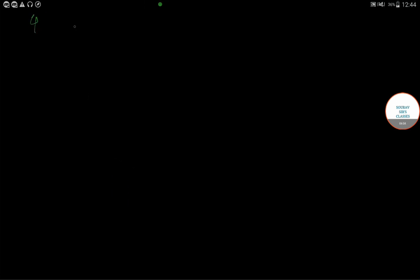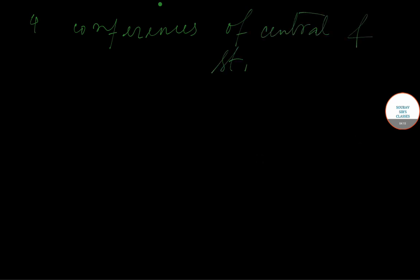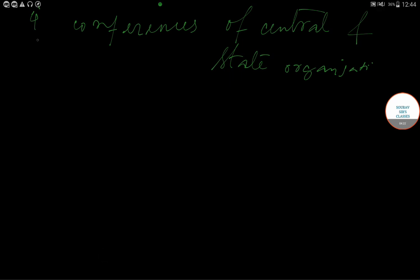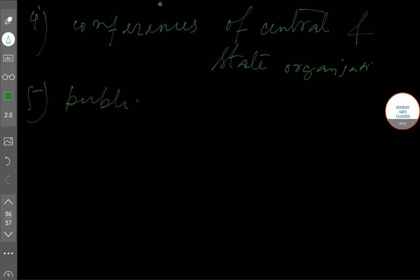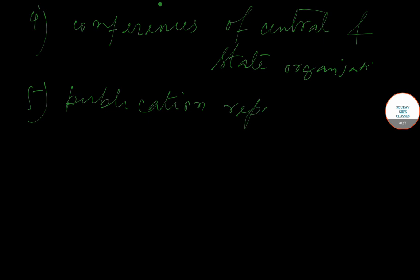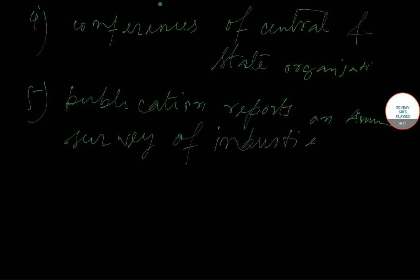The fourth activity is that it organizes conferences of the central and state organizations. Number five is that it conducts, compiles, and brings out publication reports on the Annual Survey of Industries, that is ASI.